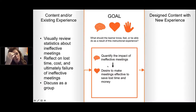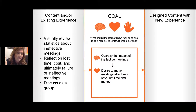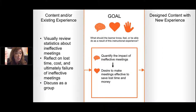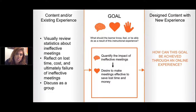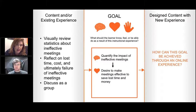So this is where you're going to use your questions panel to contribute your ideas. On the left, the existing content or experience is to visually review statistics about ineffective meetings, reflect on lost time, cost, and failure of ineffective meetings, and then discuss it as a group. But what's the goal? The goal is that the learner will, through understanding the quantified impacts of ineffective meetings, develop a desire to make meetings effective and save lost time and money. So often in introductions, the goals really are affective — you're trying to connect with them and show them why they should care. How could you have that same experience online? That's my question to you.